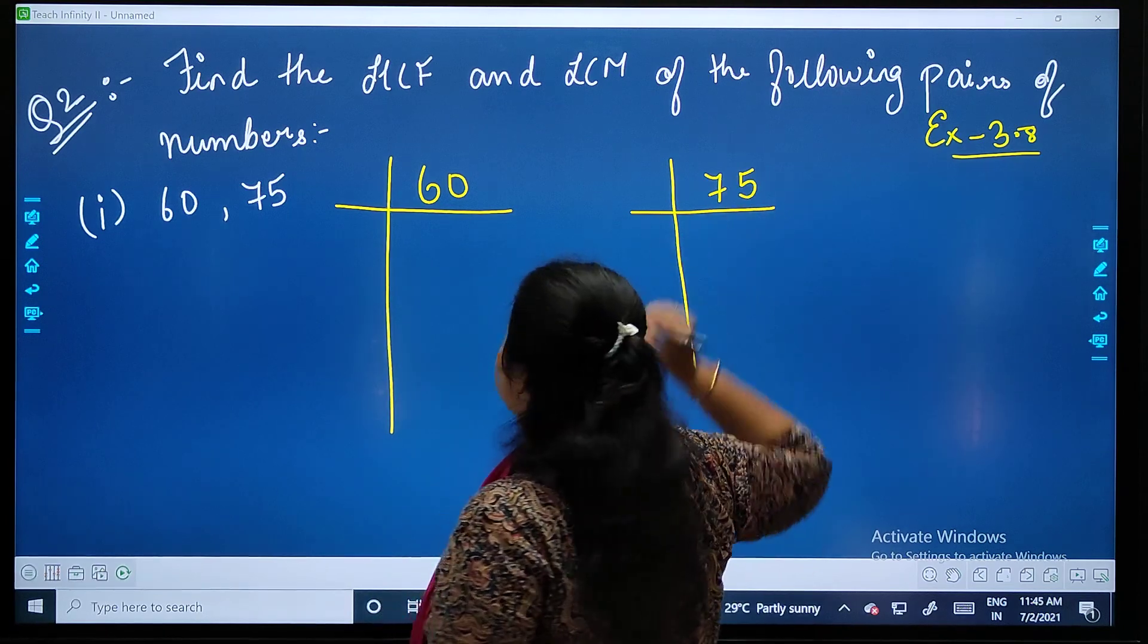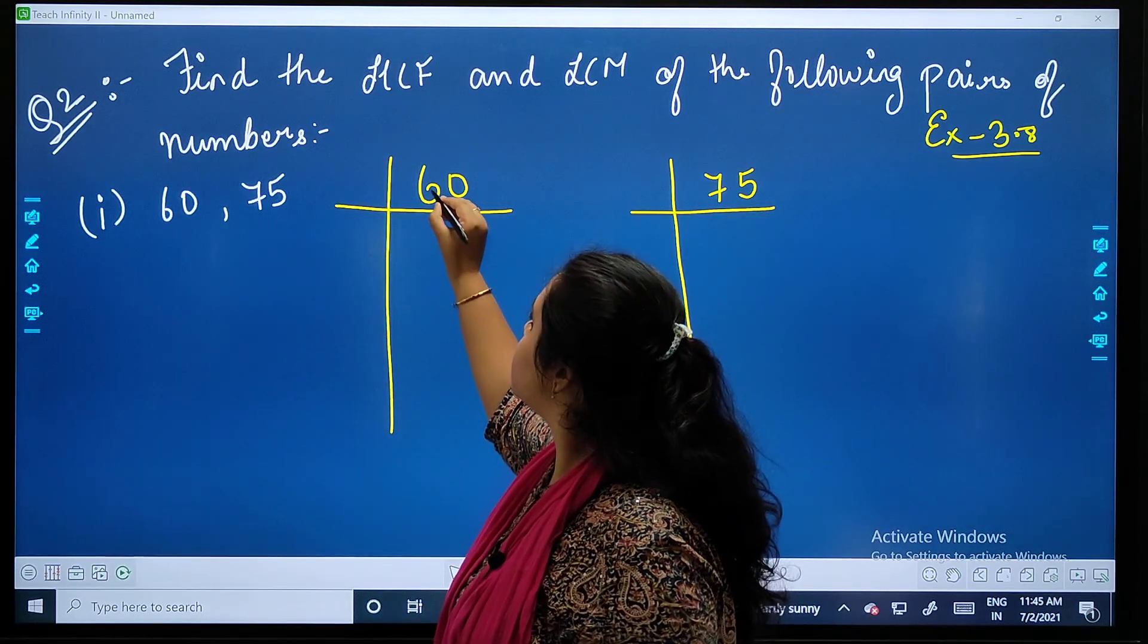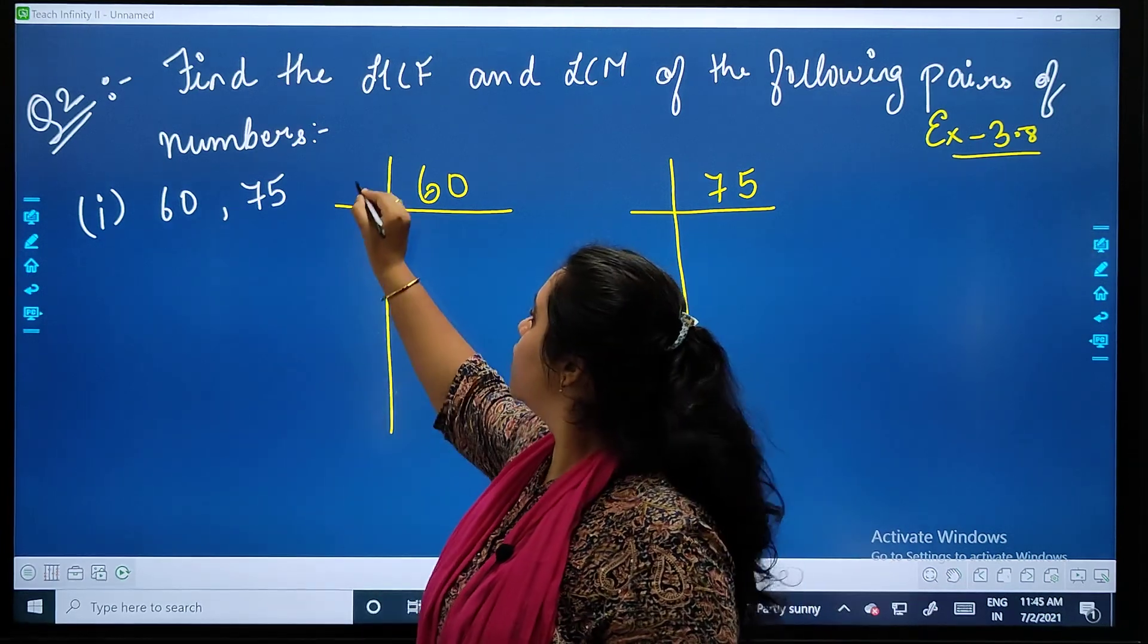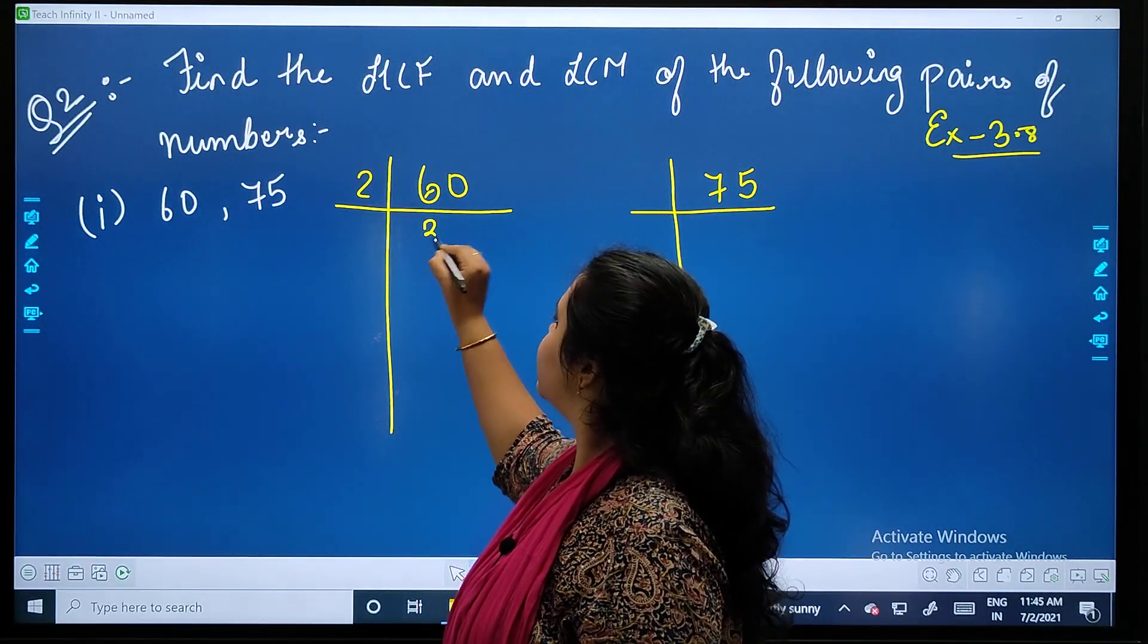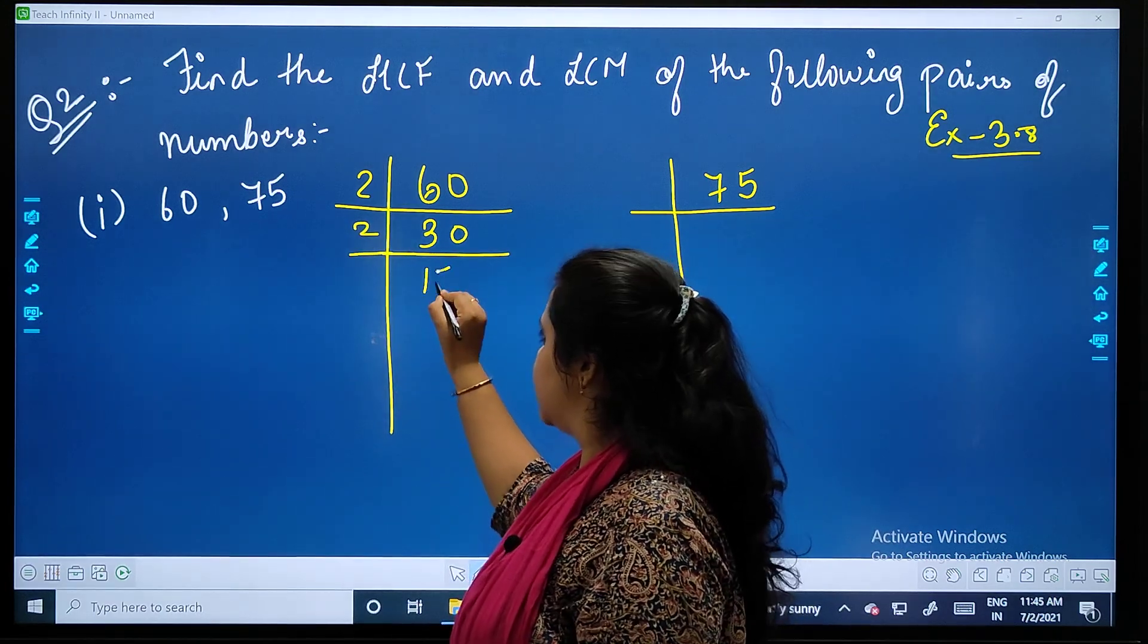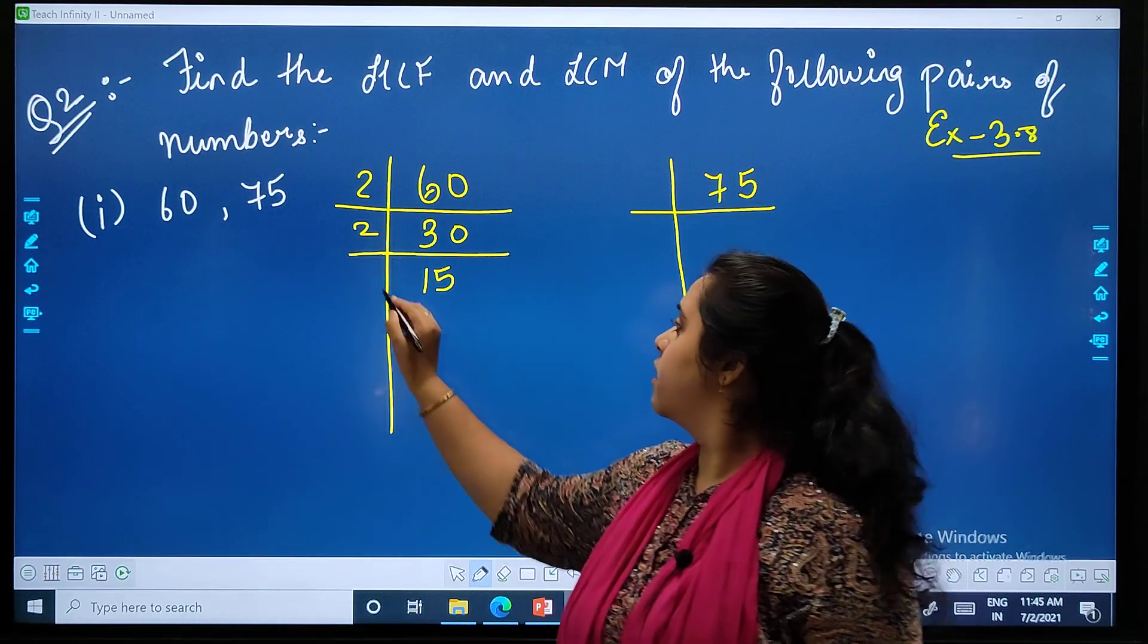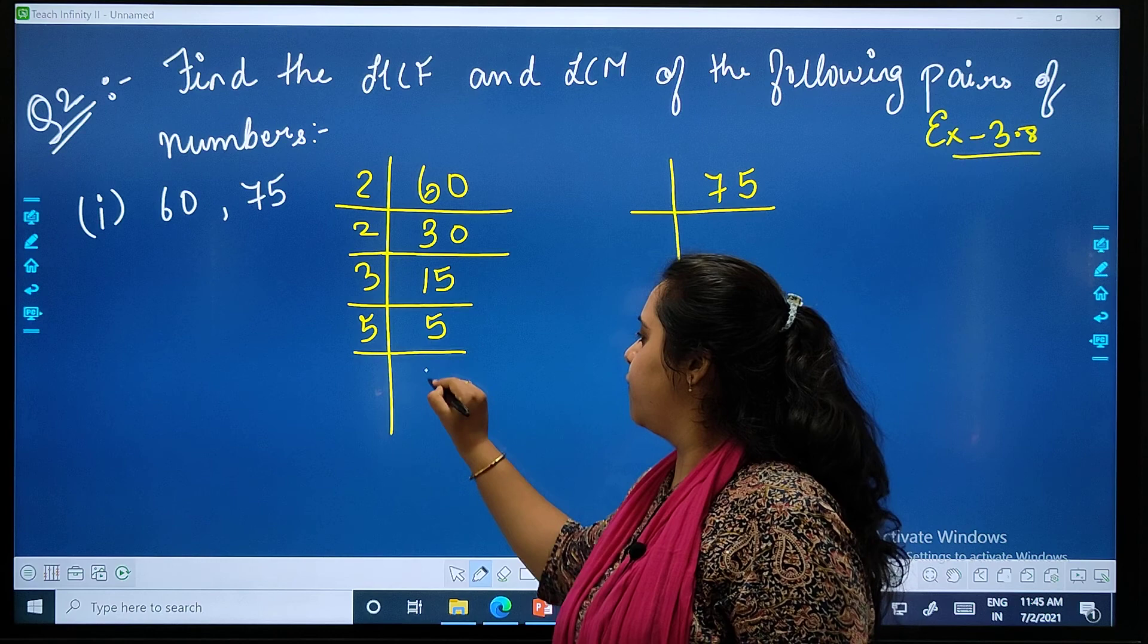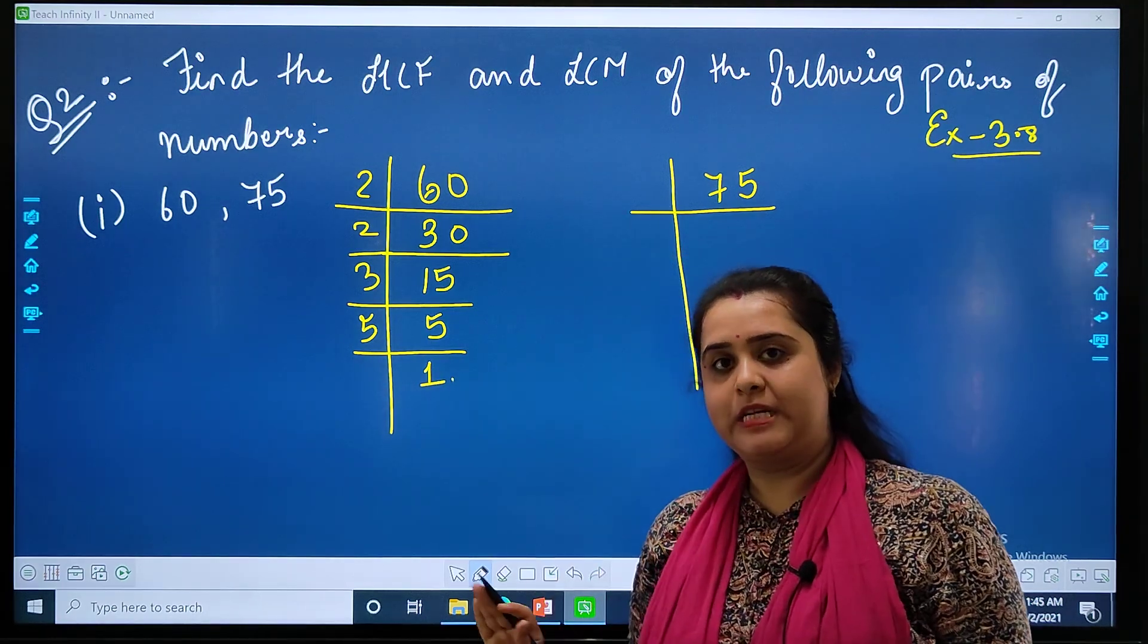As you can see, zero is there, so we can place 2. 2 thirties are 60, 2 fifteens are 30, 3 fives are 15, 5 ones are 5. Done.